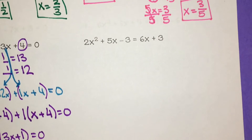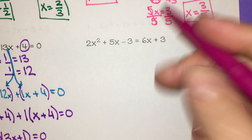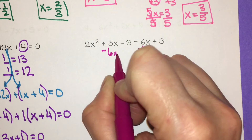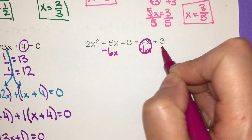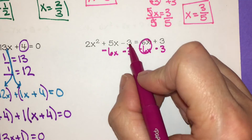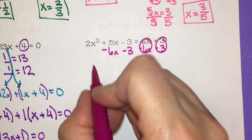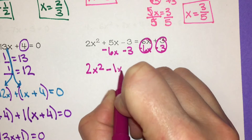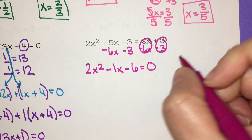Let's try one more problem. I need to move everything to the left side. I subtract 6x from both sides — 6x minus 6x is 0 — and then subtract 3 from both sides — 3 minus 3 is 0. So everything cancels on the right side. Bringing everything else down: I have 2x squared, then 5x minus 6x is negative 1x or just negative x, and negative 3 minus 3 is negative 6. So 2x squared minus x minus 6 equals 0.